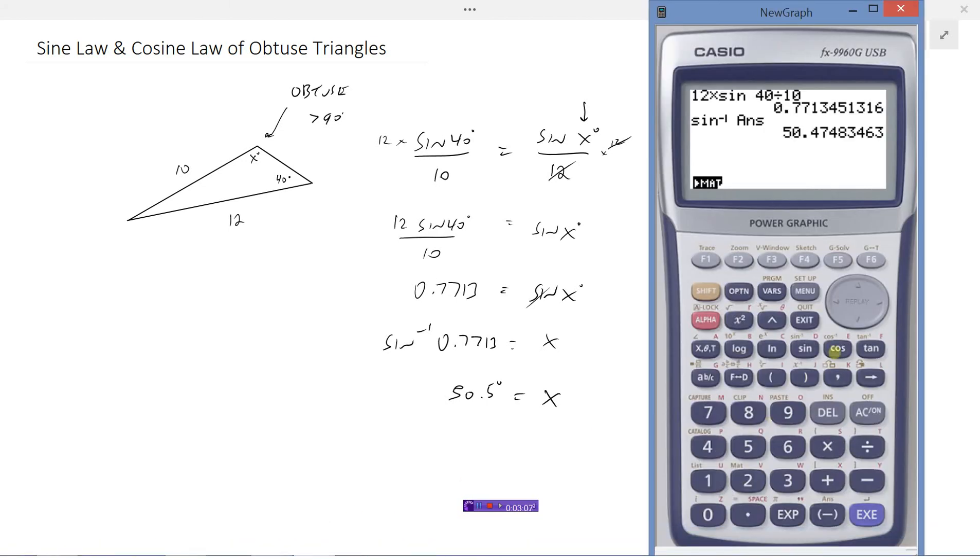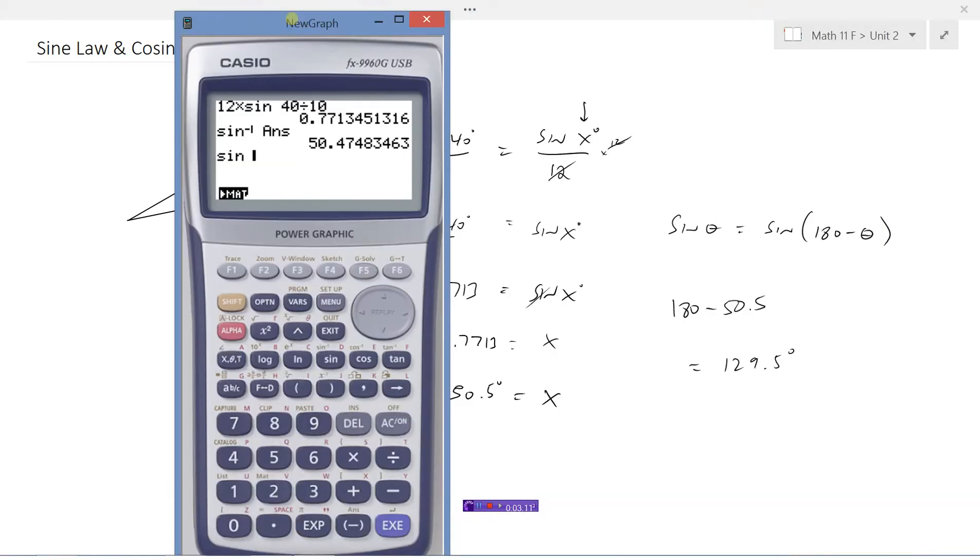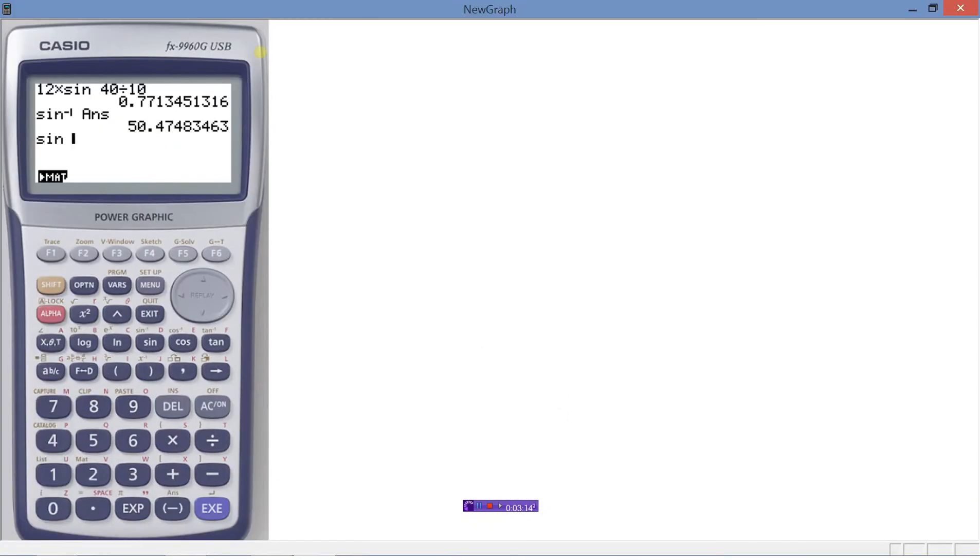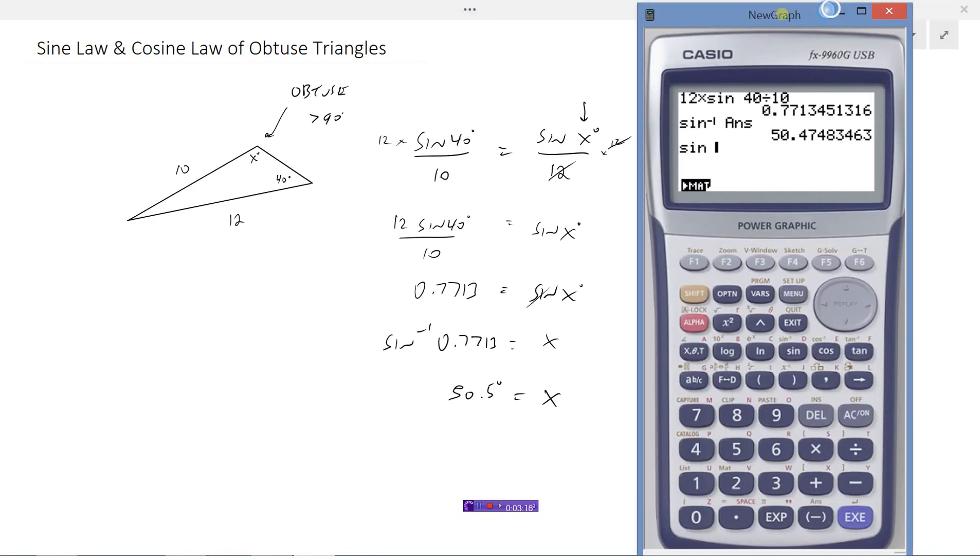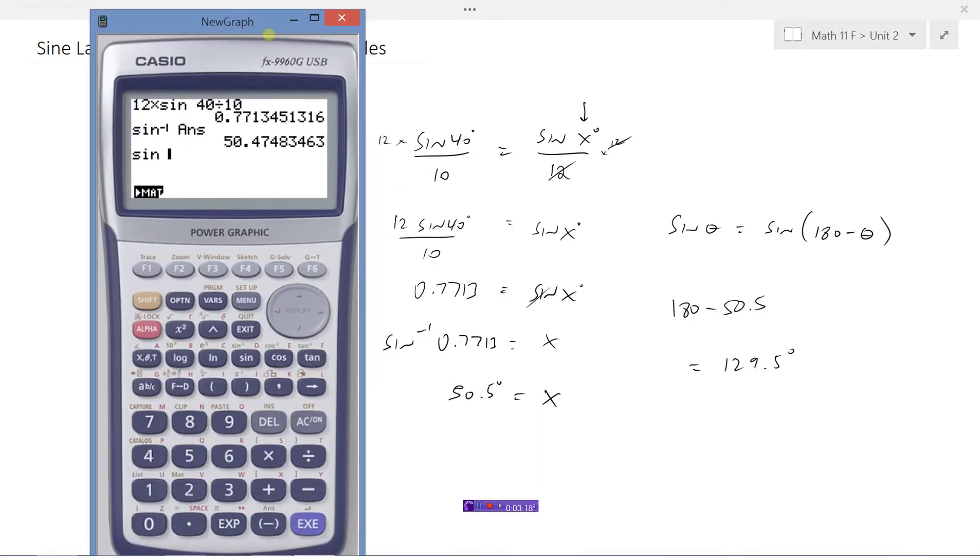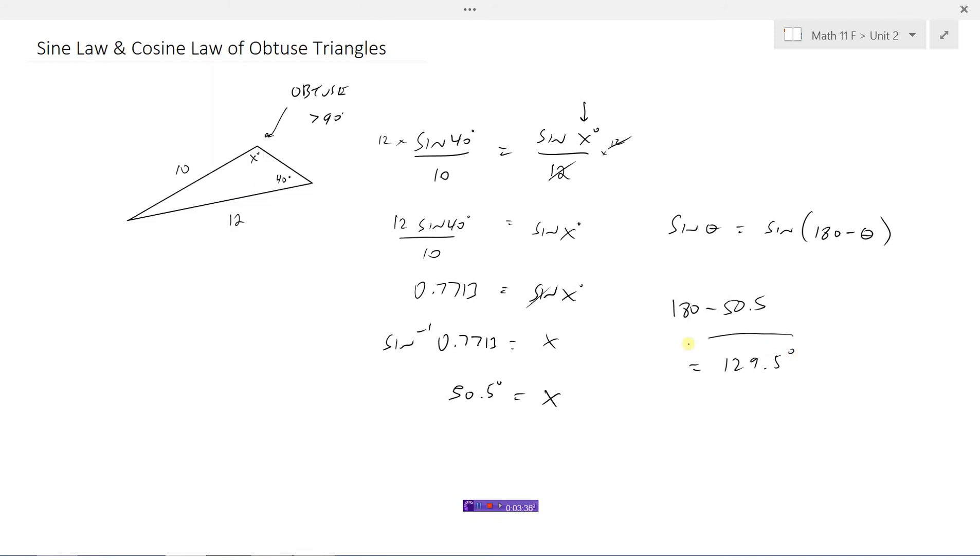Of course, if we go and check the sine of 129.5, it's giving us this same ratio, more or less because we rounded, 0.77. So the answer we want is 129.5 degrees.